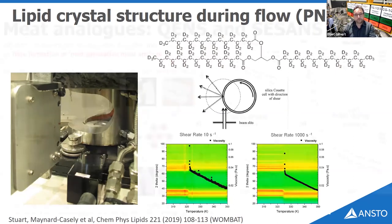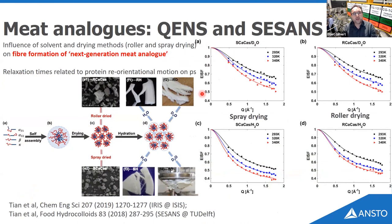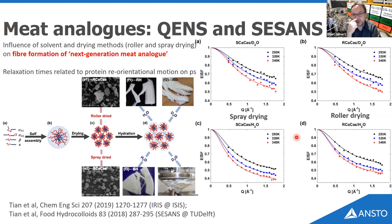Here's an example using neutron diffraction on our high-intensity powder diffractometer WOMBAT, looking at the triglyceride tripalmitin. Researchers were interested in what happens to the crystal structure and extent of crystallization under shear, using a Couette shear cell in the sample position. Another example uses quasi-elastic neutron scattering on a calcium caseinate system which, under shear and heat, forms fibrous structures of potential interest for making vegetarian meats. The group studied the orientational dynamics of the caseinate protein and were able to make recommendations about spray drying versus roller drying manufacturing methods.